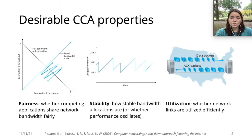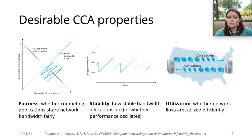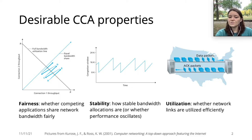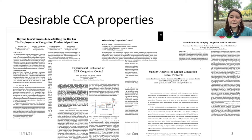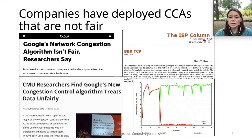Congestion Control Algorithms, or CCAs for short, determine important properties of the Internet, such as whether or not competing applications share network bandwidth fairly, how stable bandwidth allocations are, and whether network links are utilized efficiently. These and other properties of CCAs are a topic of active study for researchers in the networking community.